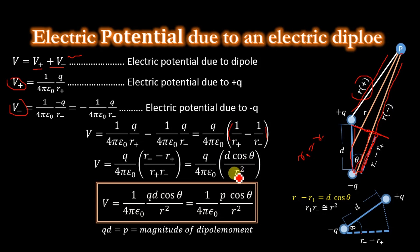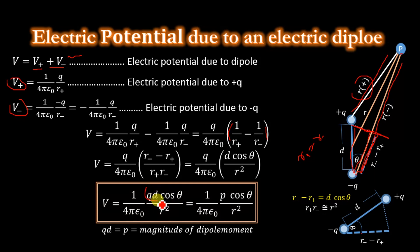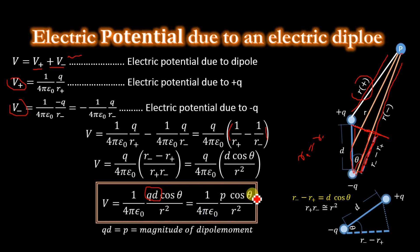So we can write this equation as V = (1 / 4π ε₀) × QD cos θ / R². Since QD is the magnitude of the dipole moment P, the electric potential at point P due to the dipole is V = (1 / 4π ε₀) × P cos θ / R².